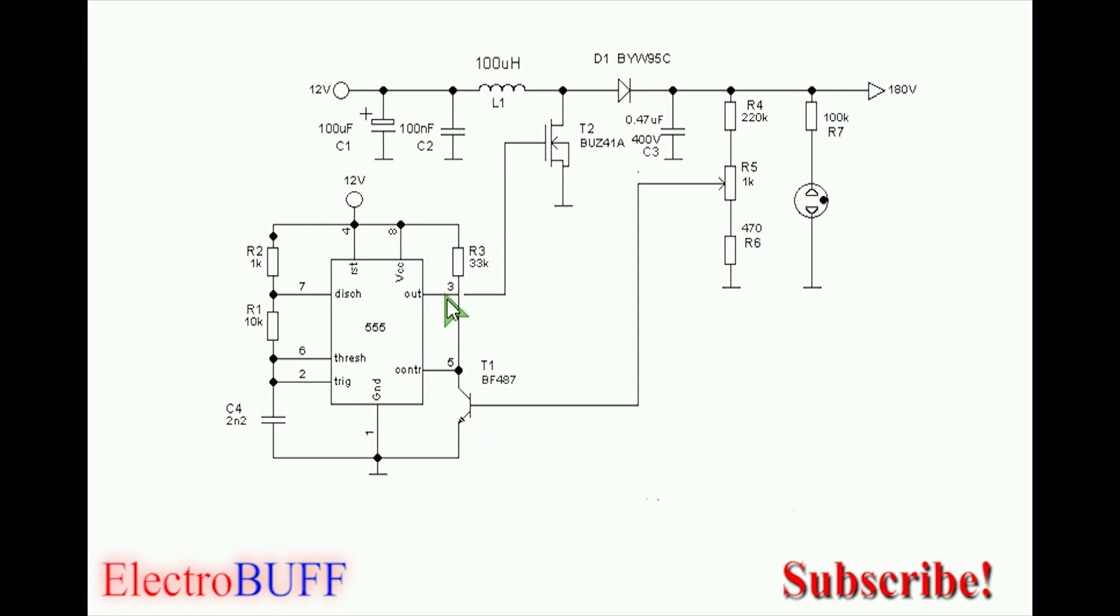You can also use the reset pin 4 and connect it to the collector of this MOSFET and pull it up to 12 volts through a 10 kilohm resistor, but this connection will just work fine.